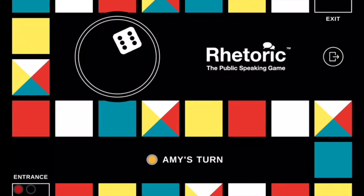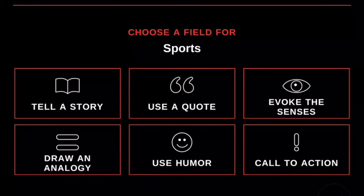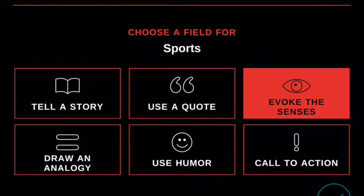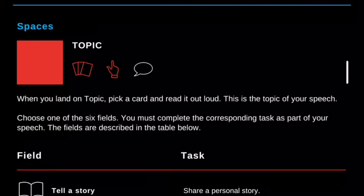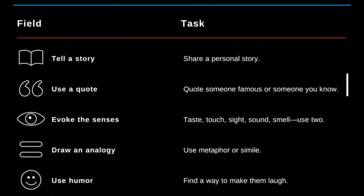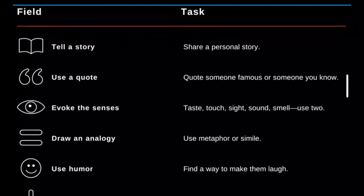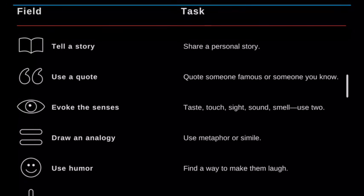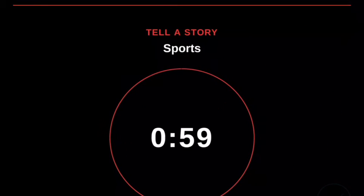Amy's up. She rolls the die and she's got a six. So Amy's landed on Topic. She taps the card, picks a card — Sports. That is her topic. She hits the green check mark and now she has to choose one of six fields: tell a story, evoke the senses, use humor, use a quote. If at any time you're not sure what you have to do, you hit the question mark at the top of the screen. It takes you to the part of the rules where you are — a very quick way of finding out what you have to do. We go back and Amy's decided to tell a story about sports.